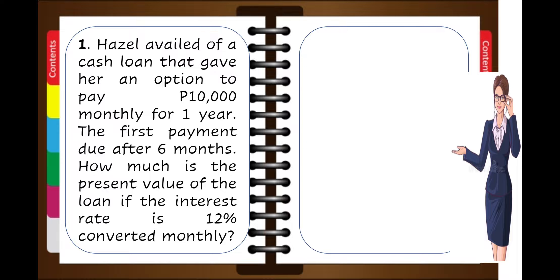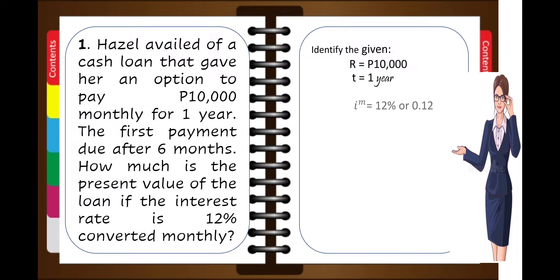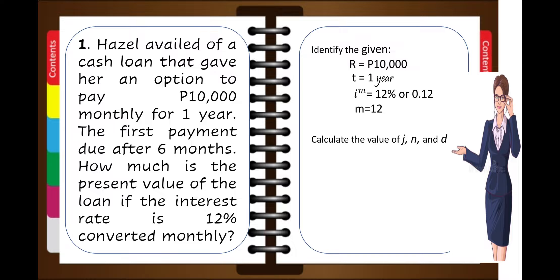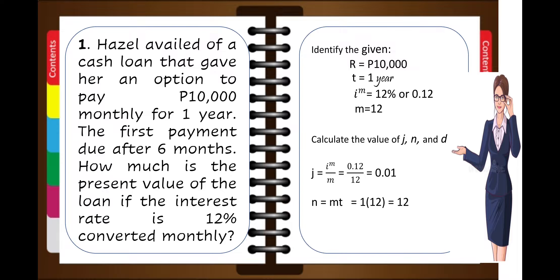Example: Hazel availed of a cash loan that gave her an option to pay ₱10,000 monthly for one year, with the first payment due after 6 months. How much is the present value of the loan if the interest rate is 12% converted monthly? We identify the given: R = ₱10,000, T = 1 year, rate = 12% or 0.12, and M = 12 because that is monthly. We calculate J = 0.12 ÷ 12 = 0.01. N = M × T = 12 × 1 = 12. D = 6 − 1 = 5 periods — this is the period of deferral.